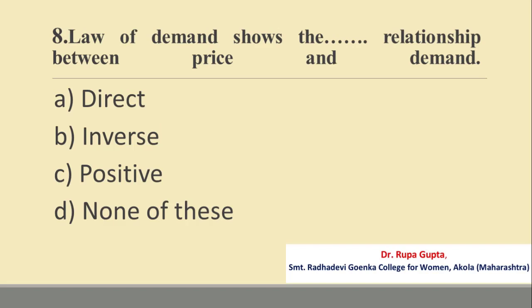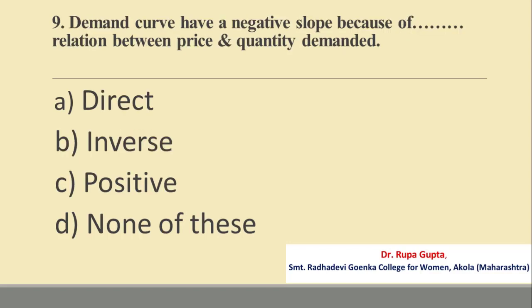Question number 8. The law of demand shows a dash relationship between price and demand. Options are: A. Direct, B. Inverse, C. Positive, D. None of these. The correct answer is B, Inverse.